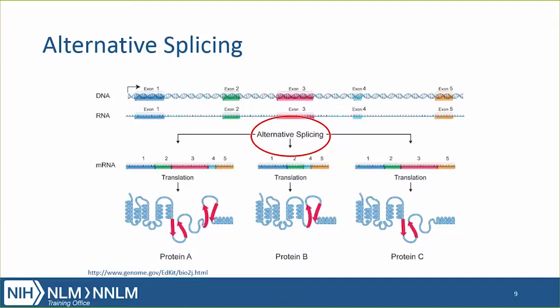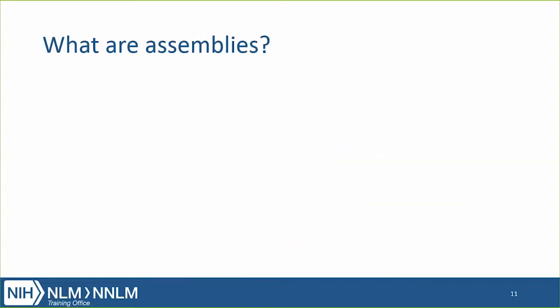Researchers need to know where the coding region, or the CDS, is in order to do their experiment — if they want to manipulate the coding region or make other determinations — and they want to know what the protein product is from a gene. In eukaryotes, or more highly developed organisms than bacteria, the genome DNA can be transcribed into more than one mRNA molecule, which can then result in more than one protein product from the gene, and you will sometimes see this on a nucleotide database record.